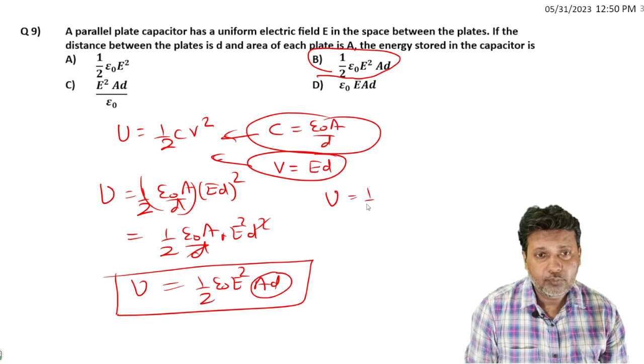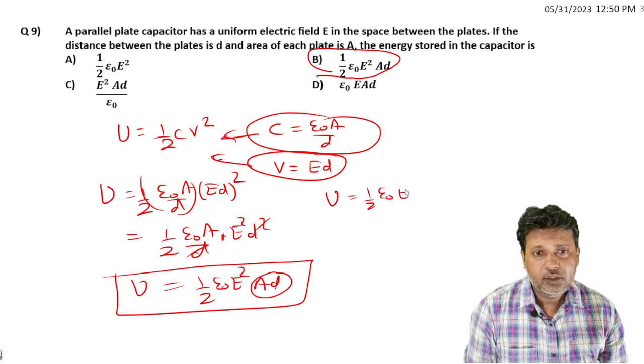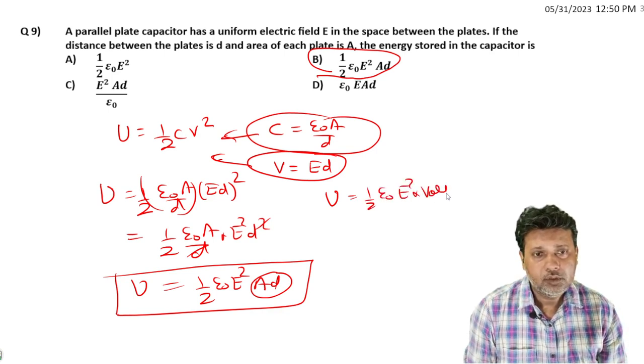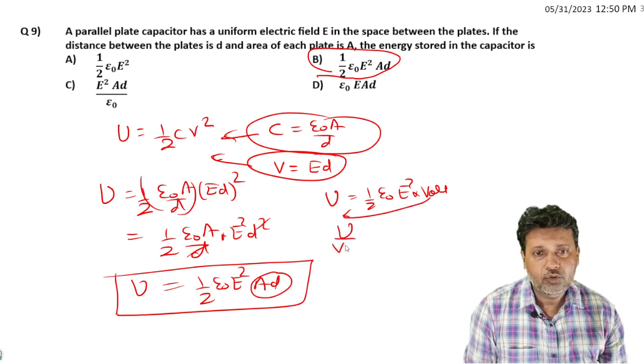We can write it as one-half epsilon-not E squared times volume. Volume times this gives us energy density.